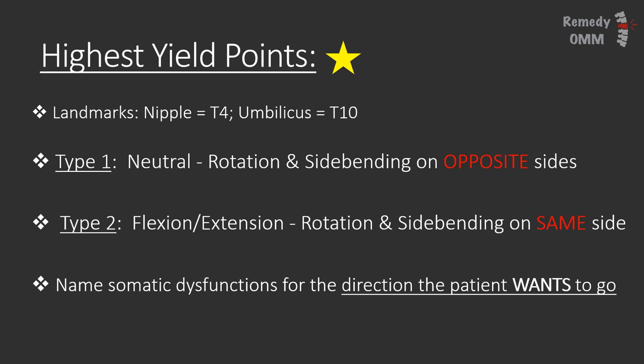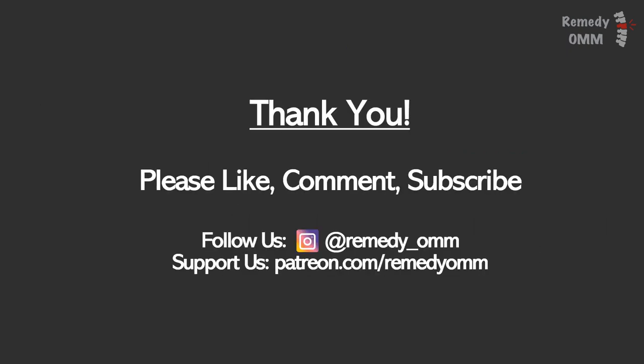That's all for today. Here are the high yield takeaways: first, know your landmarks — T4 and T10 tend to be the most high yield. Second, know your Freyett's principles: type 1 are neutral dysfunctions where rotation and side bending occur in opposite directions; type 2 involves flexion or extension where rotation and side bending occur in the same direction. Lastly, we name somatic dysfunctions for the direction of ease — the direction the patient wants to go. In the next lecture we'll go over board style questions covering these topics. Take care!